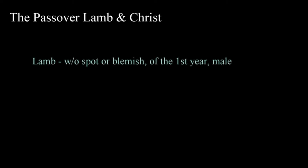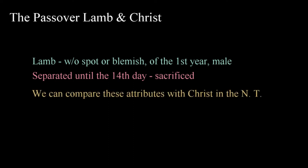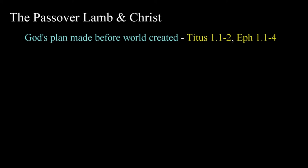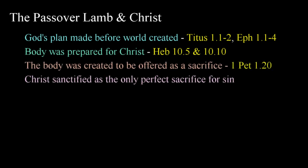The Passover lamb represents the sacrifice of Christ and the future salvation of mankind. The lamb was to be without spot or blemish, a male of the first year, and was to be separated until the fourteenth day, at which time it was to be sacrificed. We can compare these attributes with Christ and explore the Passover lamb as a type of Christ from statements made in the New Testament. The plan to save mankind was established by God before the world began, in Titus 1:1-2 and Ephesians 1:1-4. The writer of Hebrews, speaking of Christ, stated that a body was prepared for him by God, in Hebrews 10:5. By the which will we are sanctified through the offering of the body of Jesus Christ once for all, in Hebrews 10:10. Christ had been sanctified by God to be the perfect sacrifice, in 1 Peter 1:20.